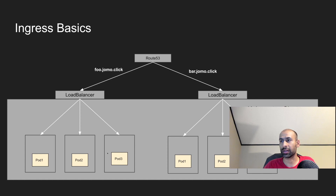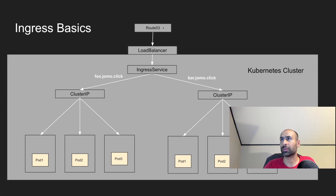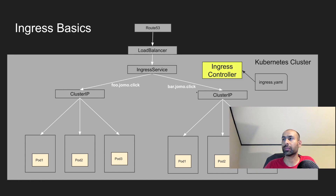You could do the same for another application with multiple pods — set up a load balancer using the NodePort service and use bar.jomo.click, adding Route 53 configuration and routing traffic. But we want all of this to be handled within the cluster itself, and that's where ingress comes into picture. In Route 53 we configure all traffic to go to the Application Load Balancer, and from the ALB it goes to the ingress service, which forwards traffic to foo.jomo.click or bar.jomo.click depending on the host. All this configuration is added in an ingress.yaml file, and that ingress configuration is listened to by the ingress controller, which we'll deploy.